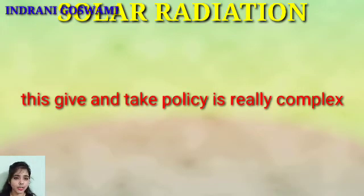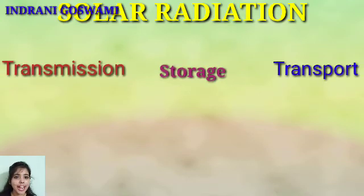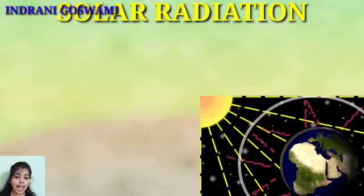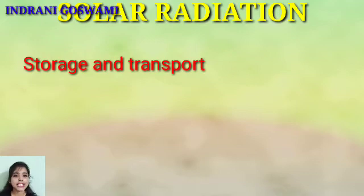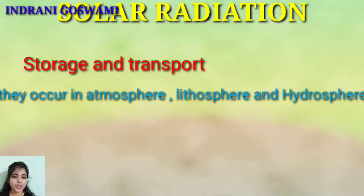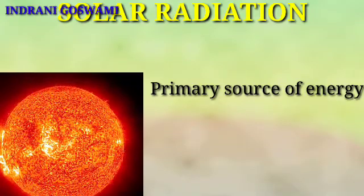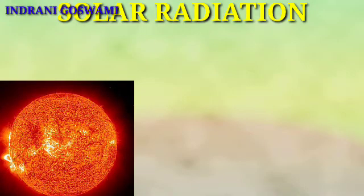This process involves transmission, storage, and transport of energy. The energy transmission is generally in the form of solar radiation, and the processes of storage and transport of heat generally occur in the lithosphere, atmosphere, and hydrosphere. Solar radiation is the one and only primary source of energy for all living and non-living organisms on Earth.